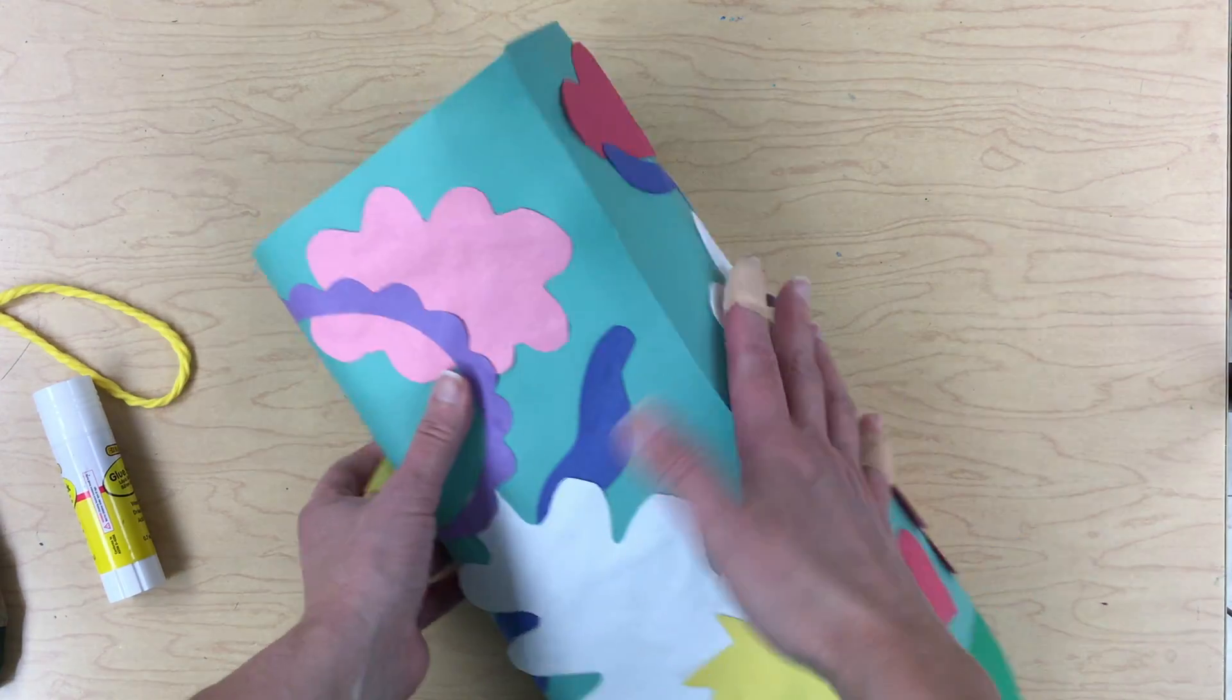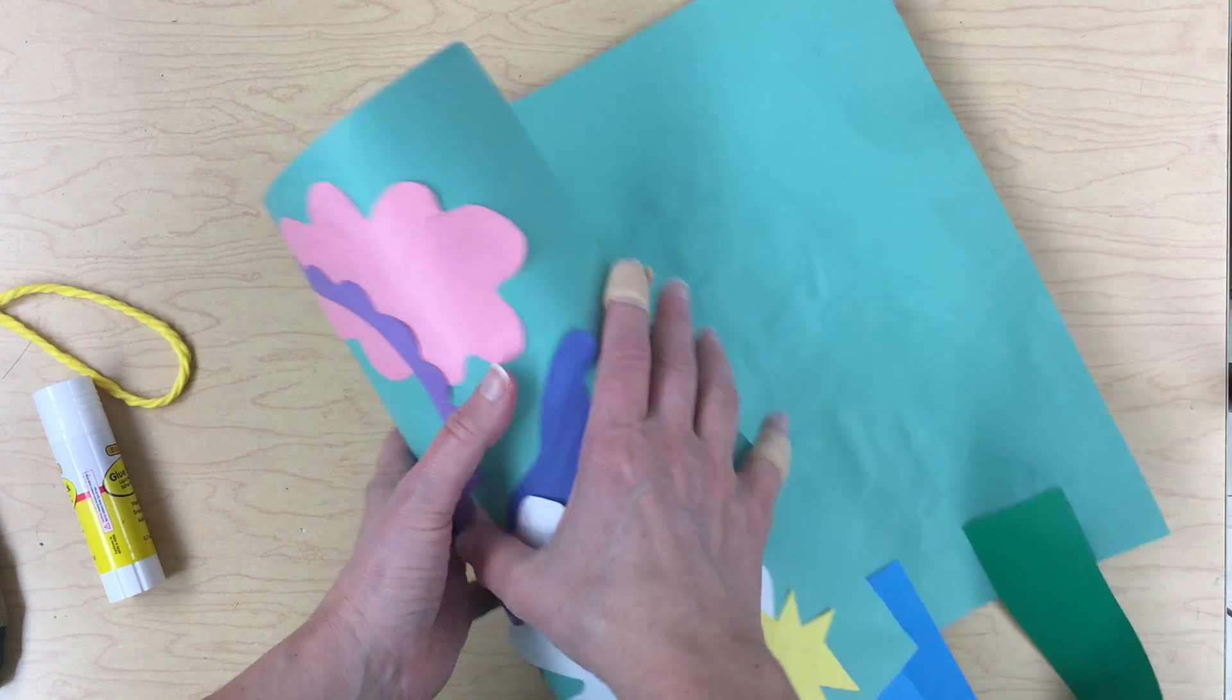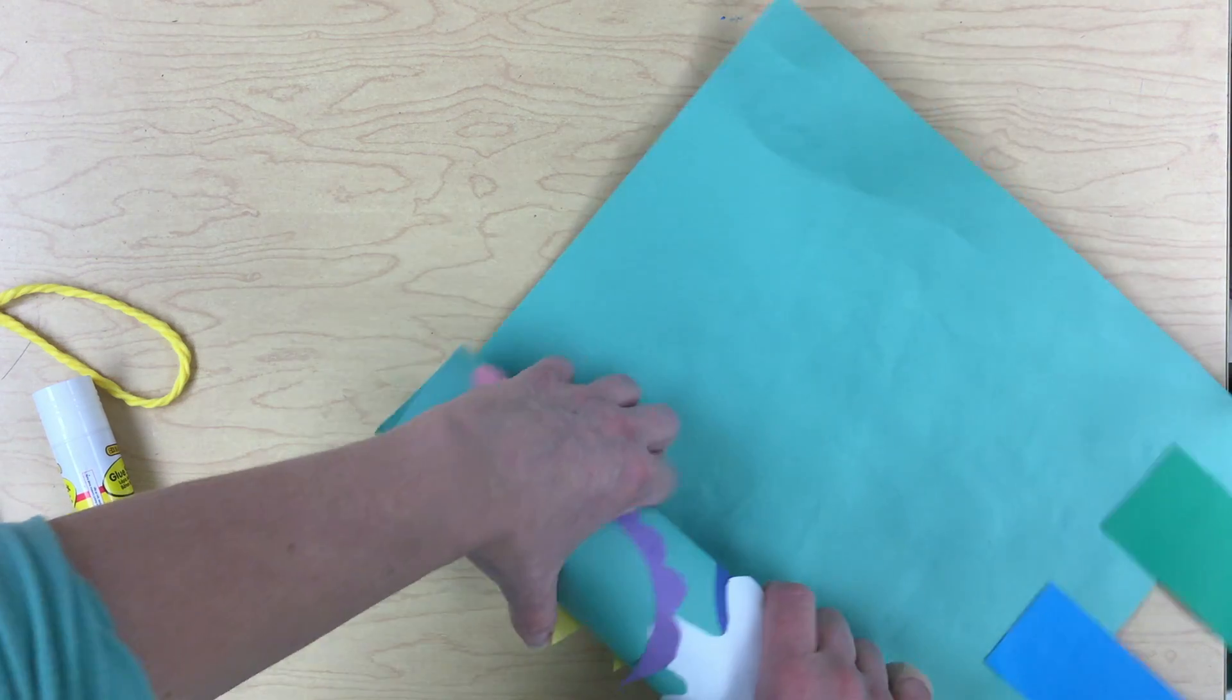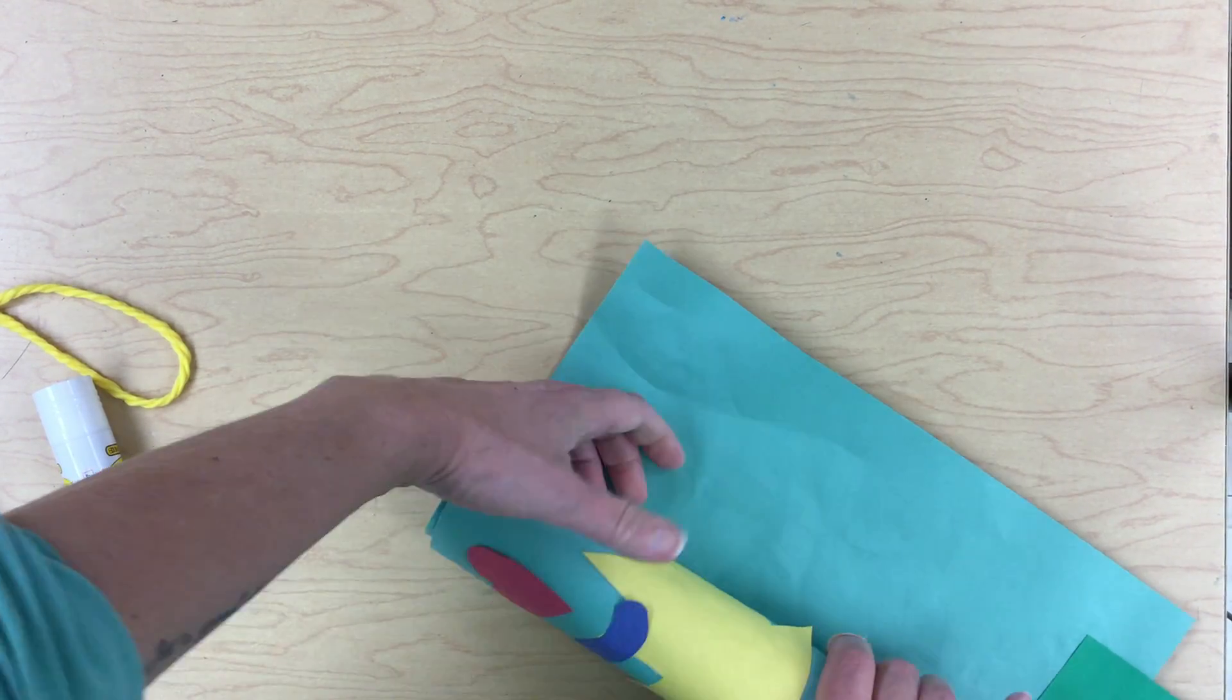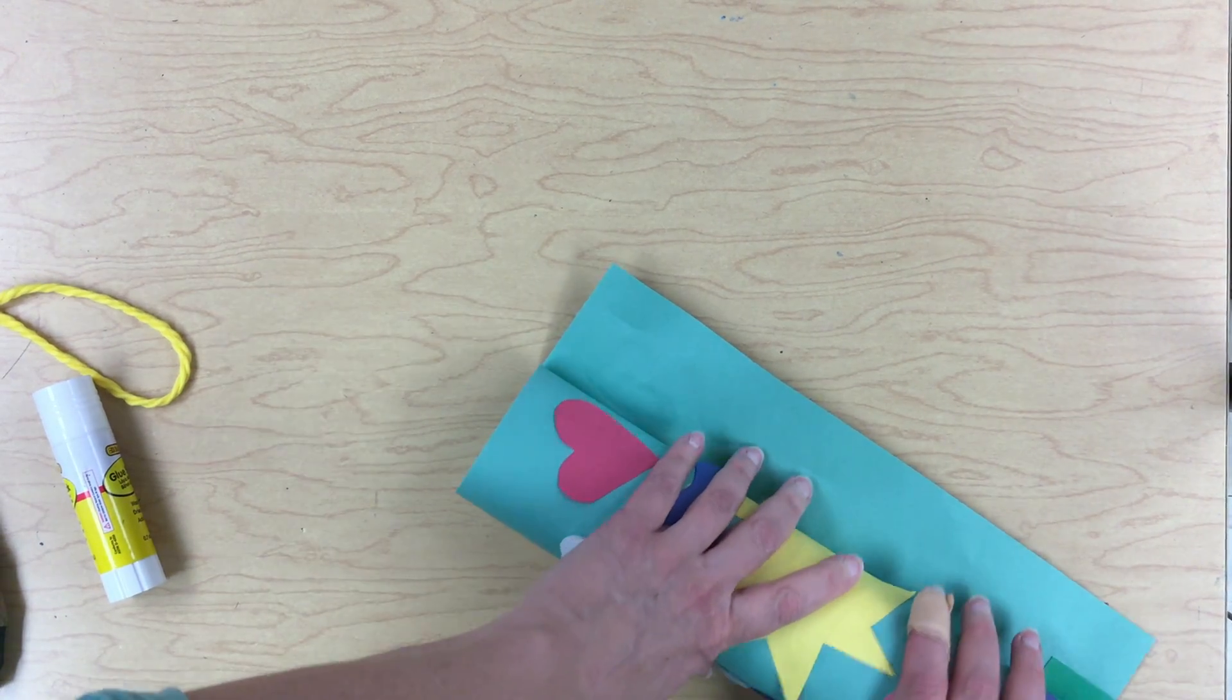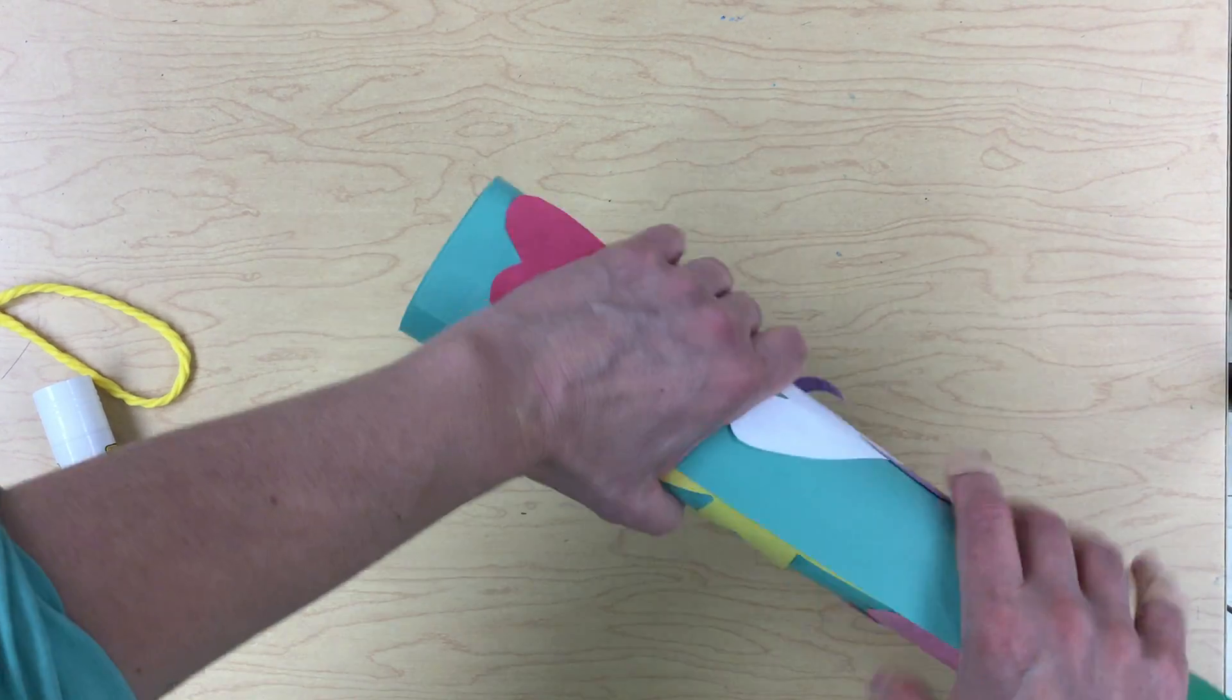Before we do this, we want to prime our paper. That means we want to curl it. You can take some of the paper and curl it like this, then curl it rolling it into a tighter circle. What you're doing is bending the paper, bending the glue, snapping it where you need to so that it will stay in a circle.